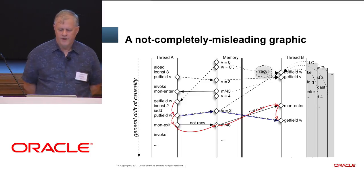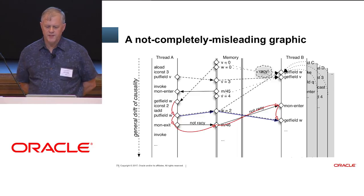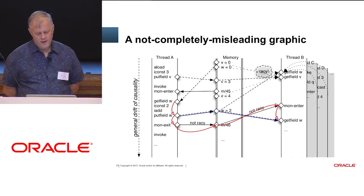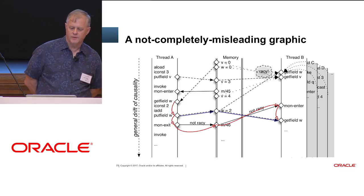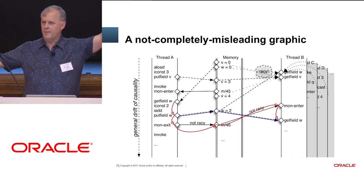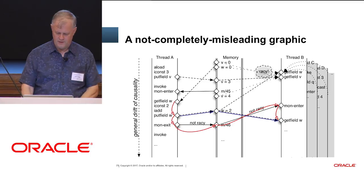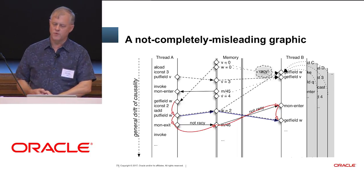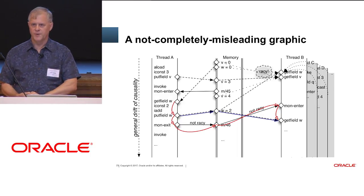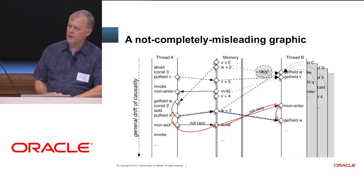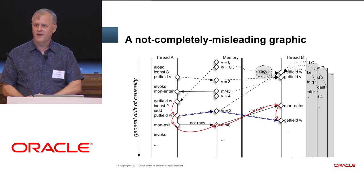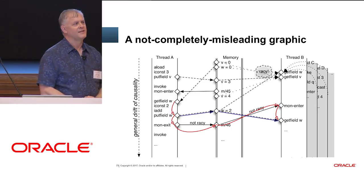Here's an example: there is a release and then an acquire — that's what the JMM calls them: a monitor exit and then a monitor enter in another thread. The red lines are some relevant solid arrows, some happens-before relations. Because they connect all the way from one thread to the other, you have a happens-before linkage between two threads. The dotted arrows touching those red arrows are also properly ordered. Those dotted lines with blue lines next to them are nailed down by the Java memory model. But all the other lines — the ones you think should also be nailed down — are not. They are racy lines.